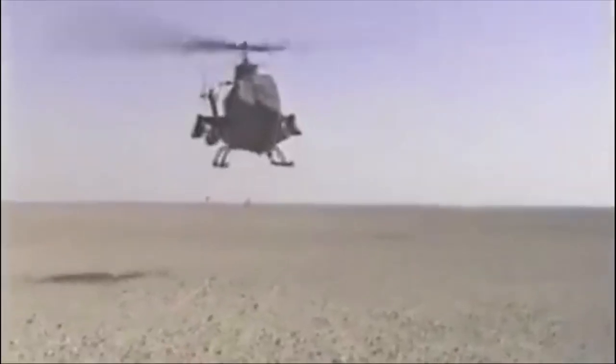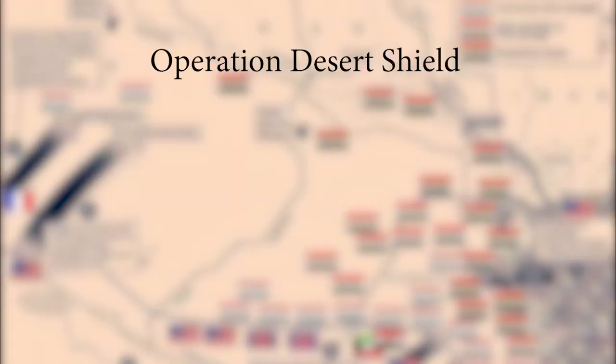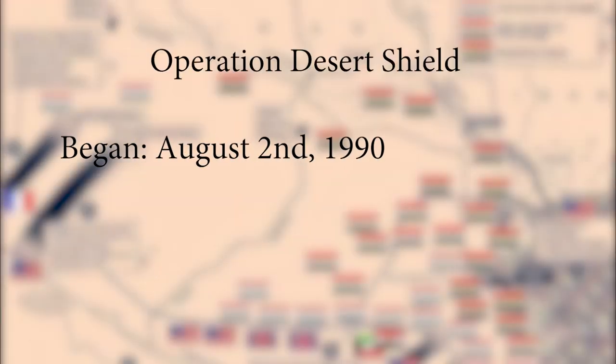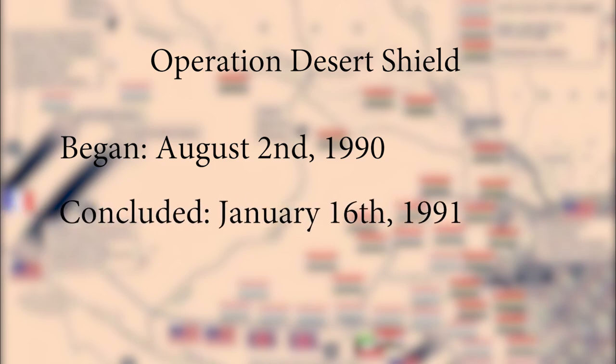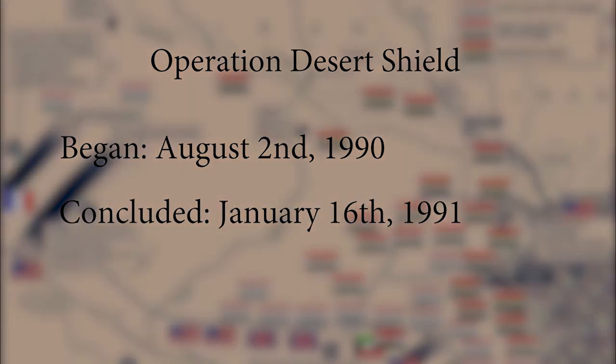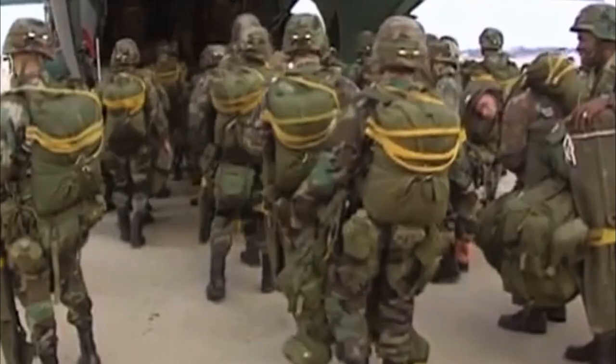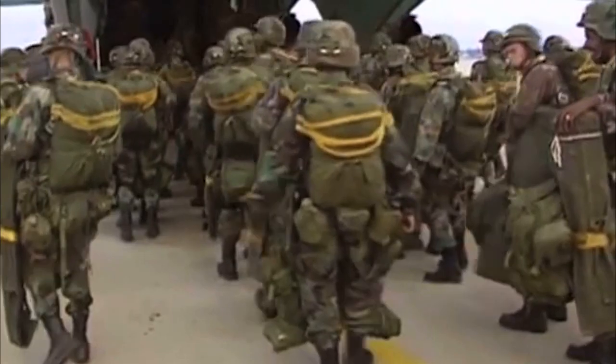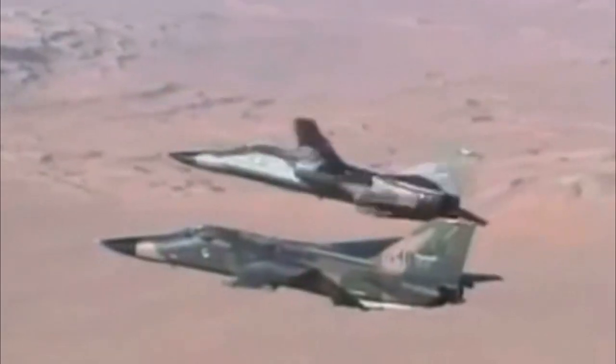This made the transition from Operation Desert Shield to Operation Desert Storm in the Gulf War. Operation Desert Shield began August 2nd, 1990 and concluded January 16th, 1991. The purpose of the operation was for the U.S. to build up forces in the Persian Gulf and to provide time to build up the Saudi Arabian defenses.